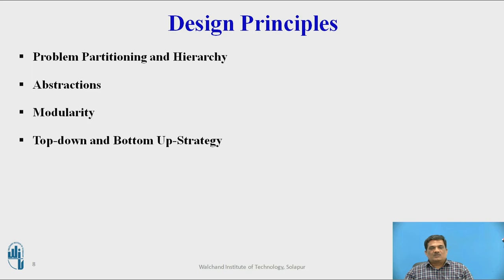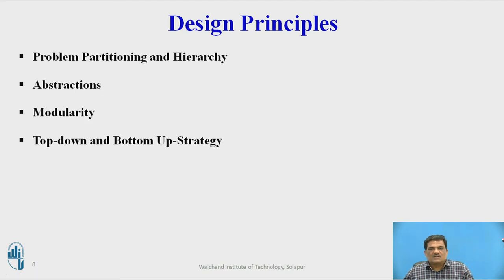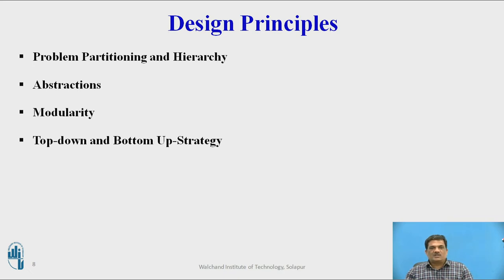Now these are the design principles. To proceed with the design phase, every design engineer has to follow some set of principles or guidelines. The principles are: problem partitioning and hierarchy, abstractions, modularity, and top-down and bottom-up strategy. In problem partitioning and hierarchy, the large and complex problem is divided into independent, manageable parts, then those parts are conquered and assembled to find a solution to the entire system. After applying problem partitioning, we are left with n number of parts, and these parts are organized in a well-structured hierarchy so that everyone can understand each part of the system.